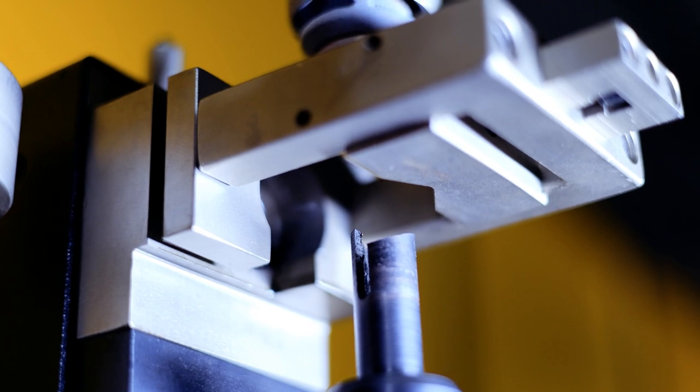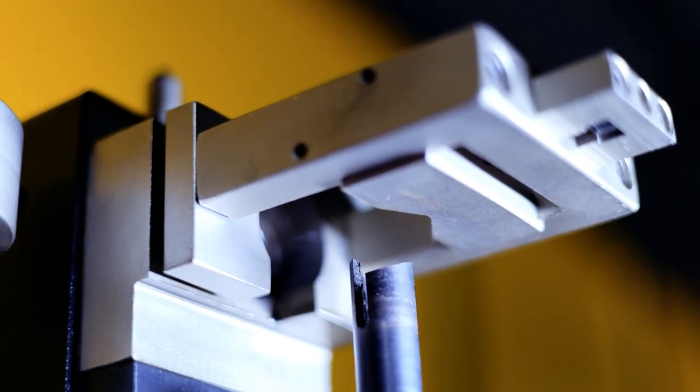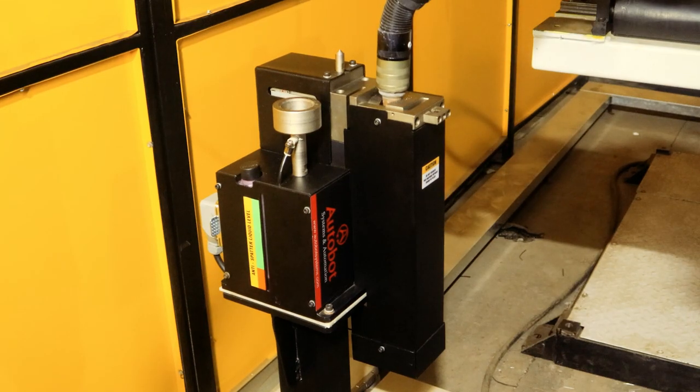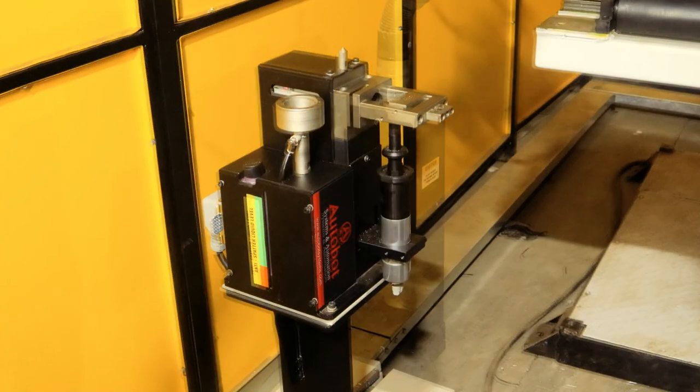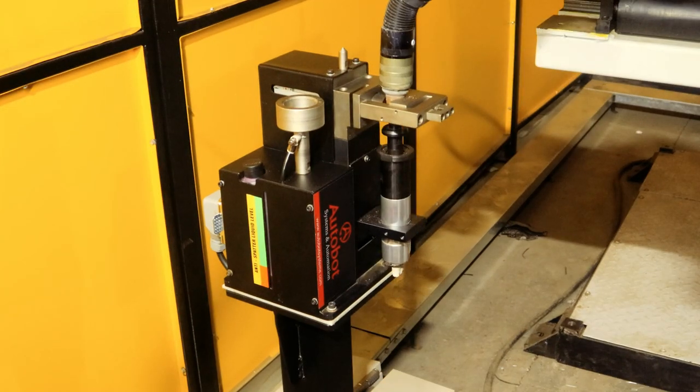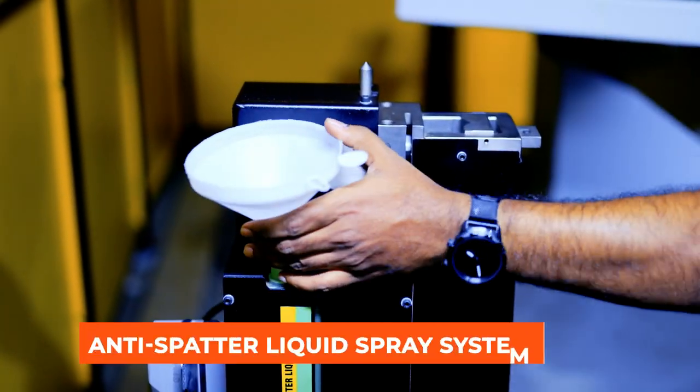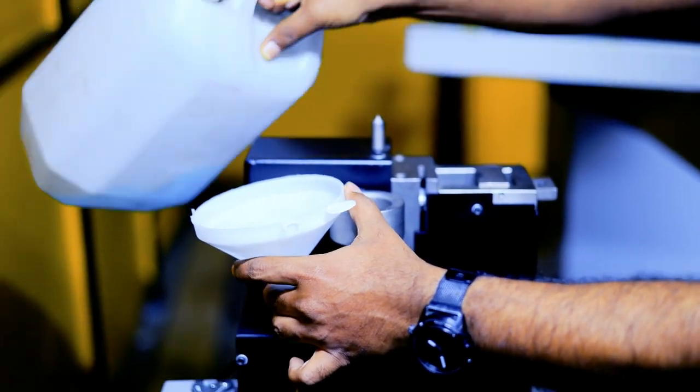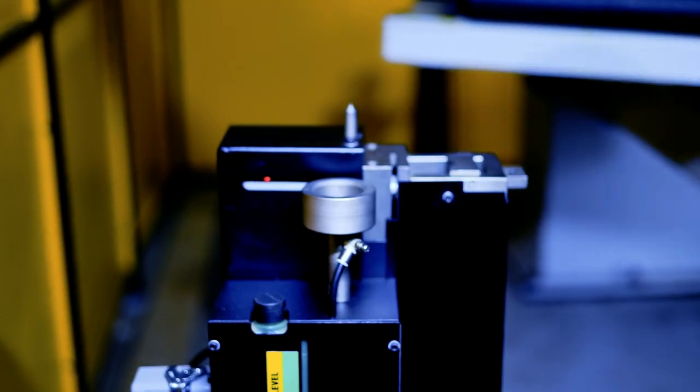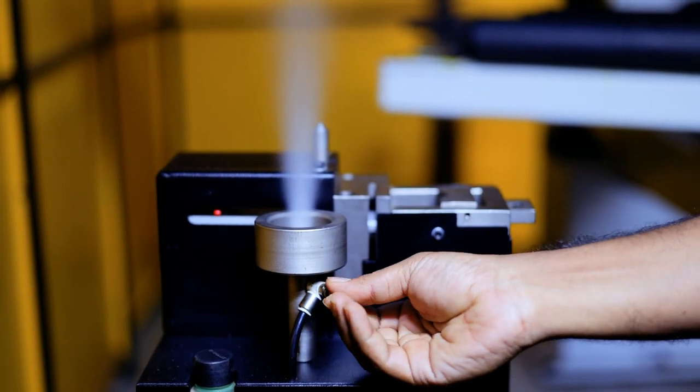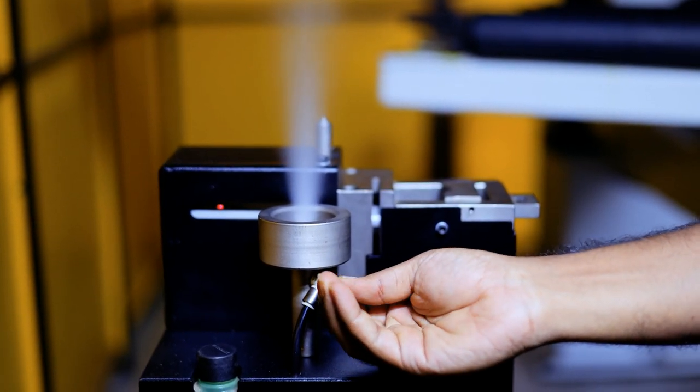For almost all robot welding torches, precise clamping of the gas nozzle fixes the torch in place during the cleaning process. Anti-spatter liquid spray system provides direct economical spraying of anti-spatter agent, reduces welding spatter adhesion, and extends service intervals.